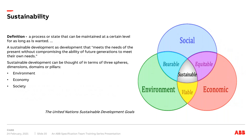Sustainability: a key area. The definition is a process or state that we can maintain at a certain level for as long as wanted. It's about balancing the three spheres — social, economic and environmental — so that they can operate without damaging the requirements of future generations to meet their own needs. More and more, we need to take this into consideration in the way we design, operate and manage our built environment.